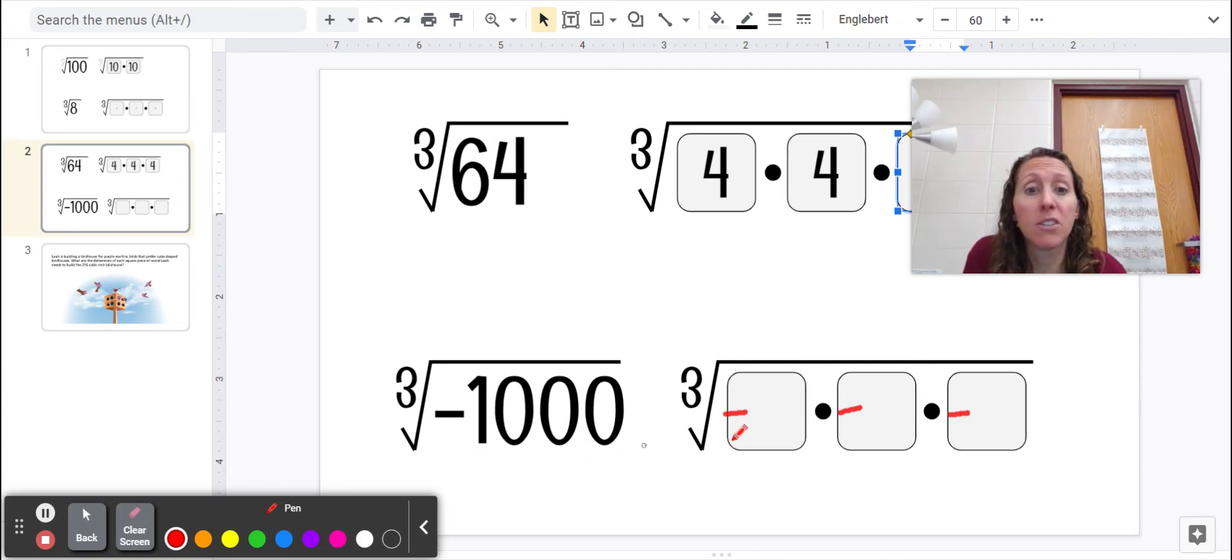Now, we have a bunch of zeros here, so I'm going to guess that it's probably a number that ends with zero. So I'm going to pick 10. 10 times 10 is 100, and 100 times 10 is 1,000. So that would work out. So the answer to that one would be negative 10.